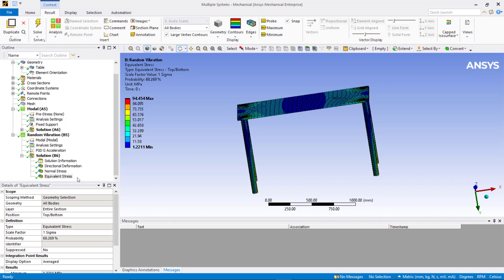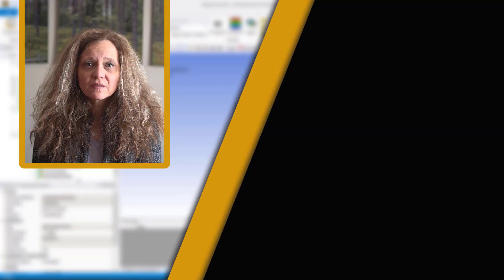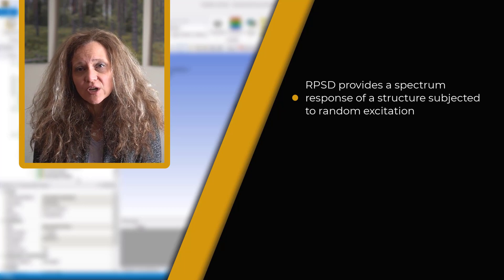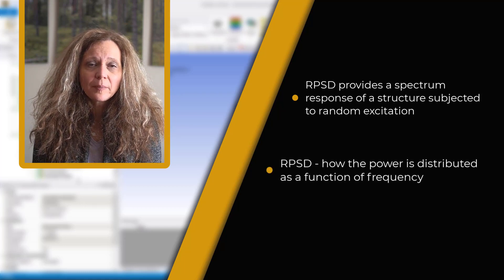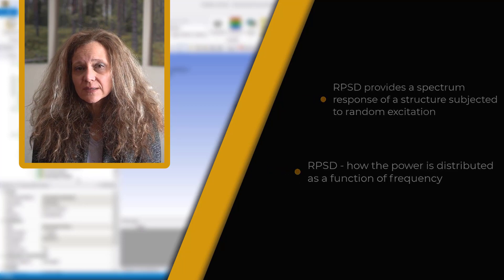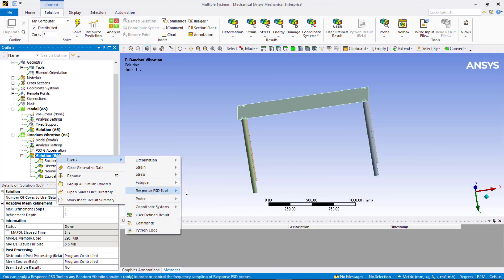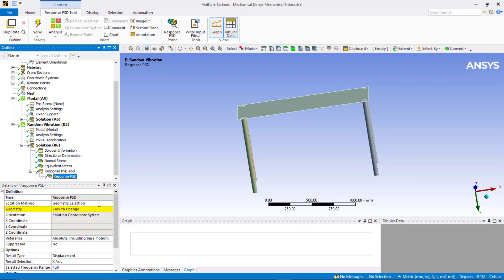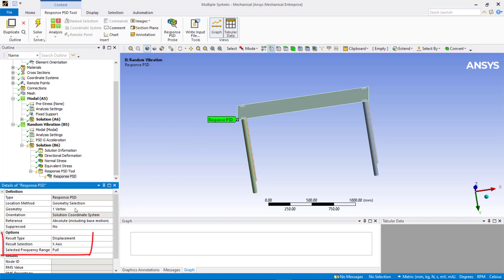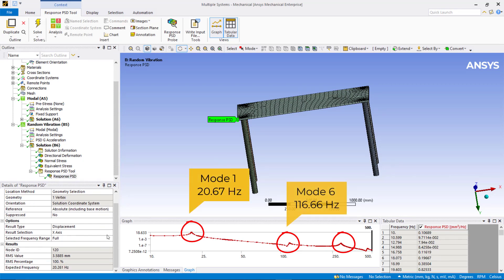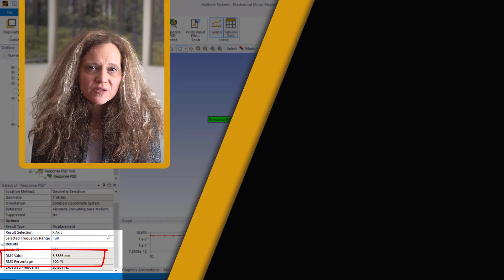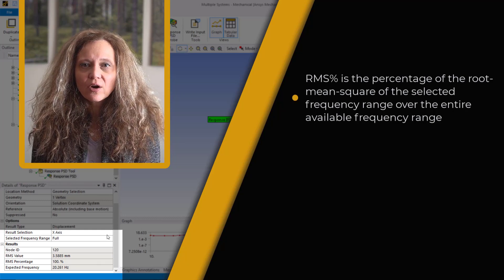Let's see how the response PSD can be used to get more insight into the system's response. As we mentioned earlier, the RPSD provides a spectrum response of a structural component subjected to random excitation. The RPSD plot provides information such as how the power is distributed as a function of frequency. Right-click on the solution and insert the Response PSD tool. Select the vertex on the table corner and insert Response PSD for displacement in x-direction. Resulting Response PSD shows peaks at frequencies of mode 1, 6 and 12.